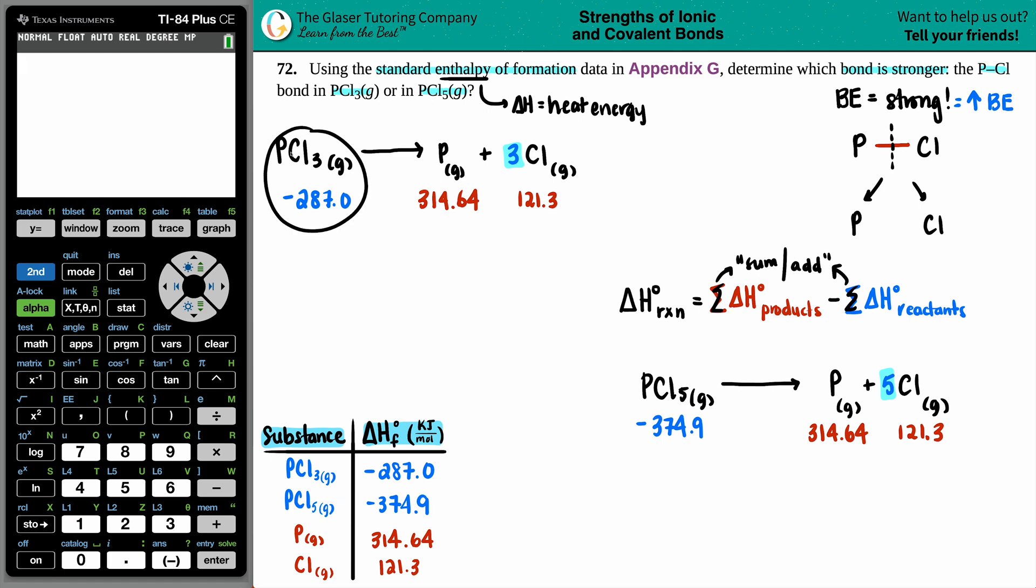For both of these equations, we have to sum up the left side and sum up the right side. For PCl3, there's only one of them, so I'm just going to leave this number alone. But I have two products for this equation - I have to add them together, phosphorus plus chlorine. I have to add these two together. However, the 121.3, that's for only one chlorine, but we have three chlorines. So we have to take that number and times it by three.